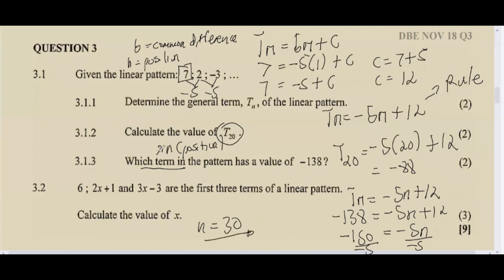Remember: n, the term or position, must always be a positive integer. It cannot be negative or a decimal, because we cannot say something is in position negative 2. Since n = 30, the value of negative 138 is found in term 30.